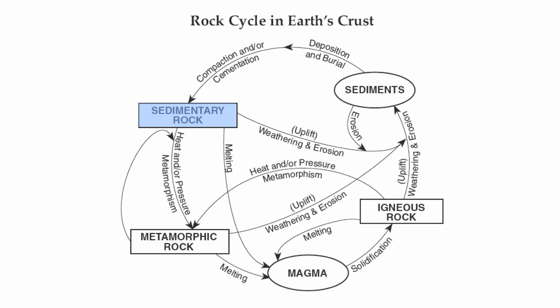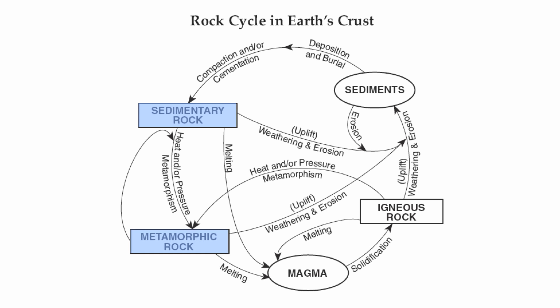Sedimentary rocks can also undergo a tremendous amount of melting to become igneous rocks — the magma solidifies and crystallizes into igneous. Or sedimentary rocks can undergo heat and pressure to become metamorphic rock.